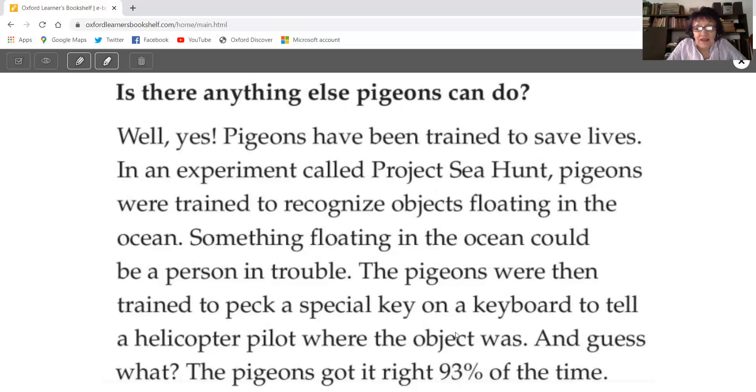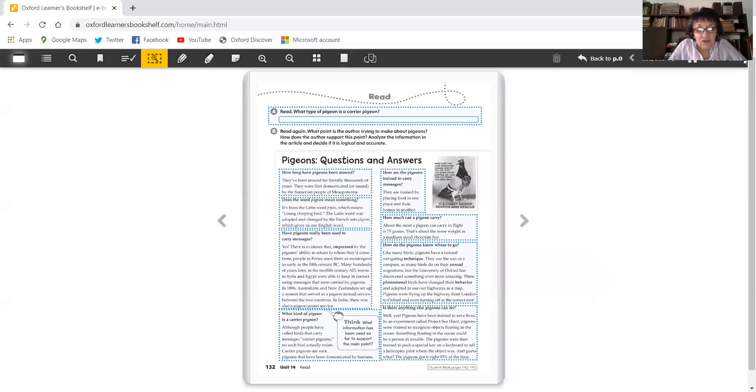Is there anything else pigeons can do? Well, yes. Pigeons have been trained to save lives. In an experiment called Project Sea Hunt, pigeons were trained to recognize objects floating in the ocean. Something floating in the ocean could be a person in trouble. The pigeons were then trained to pick a special key on a keyboard to tell the helicopter pilot where the object was. And guess what? The pigeons got it right 93% of the time. Aren't they amazing? Of course they are amazing.